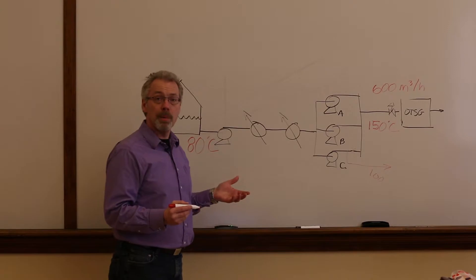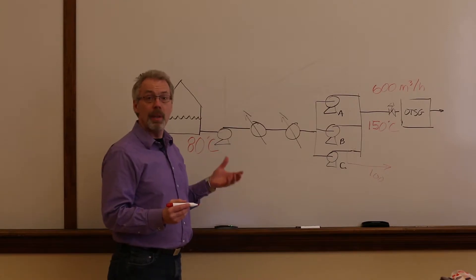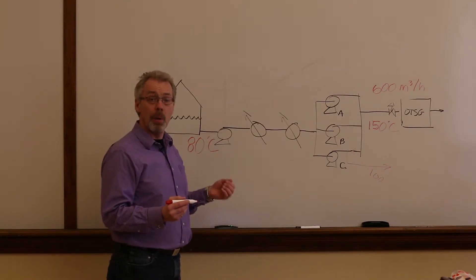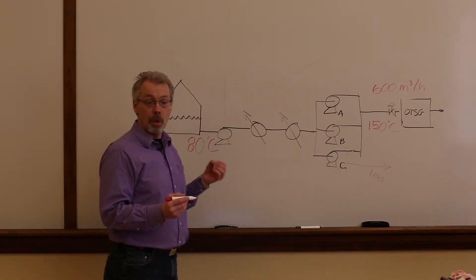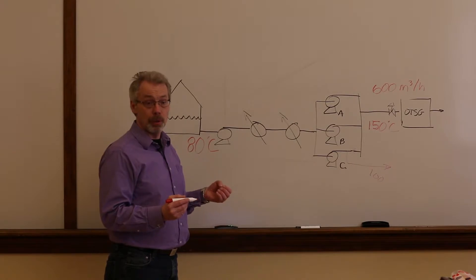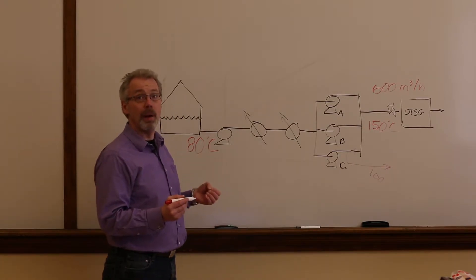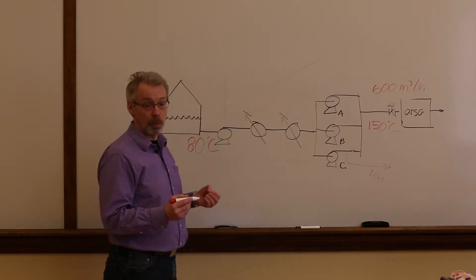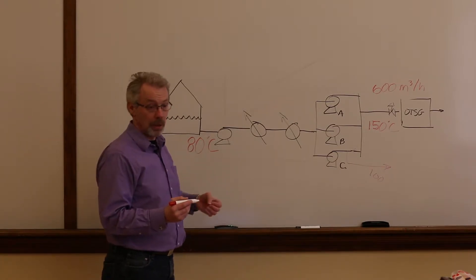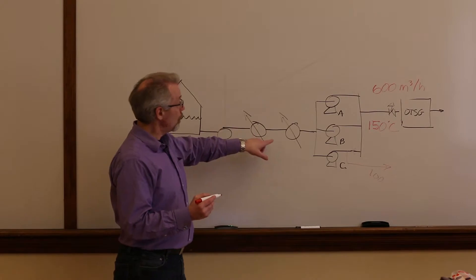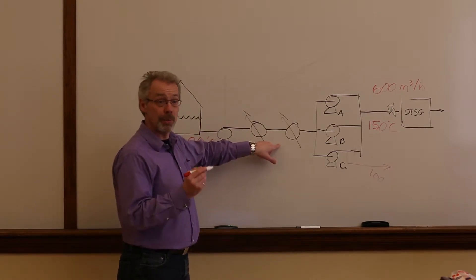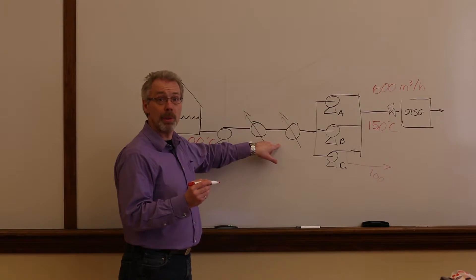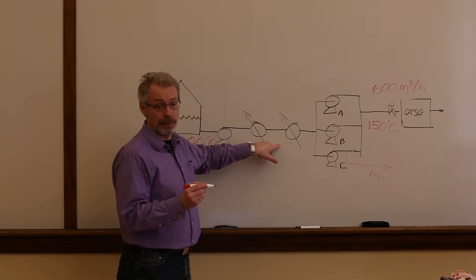So when the third pump is started, there is an extra 100 cubic metres an hour of coolant going through the high pressure pumps, and that 100 is being wasted. The total coolant flow rate through the heat recovery section has now increased from 600 cubic metres an hour to 700.